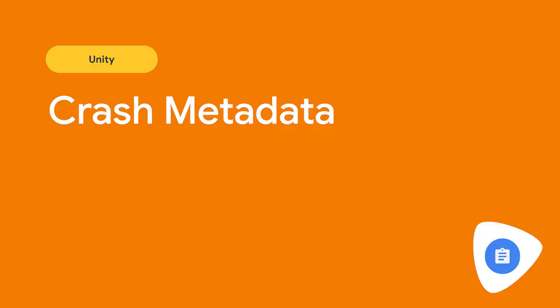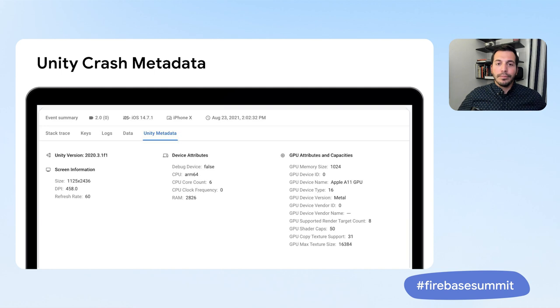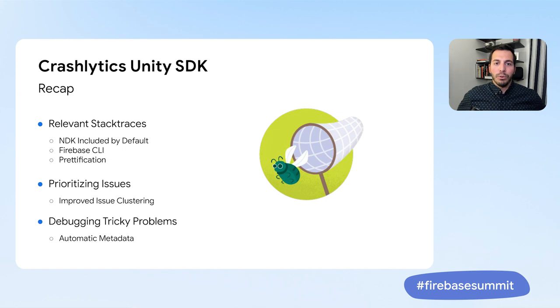Have you ever had a problem that only impacts certain devices or screen sizes? For example, an issue with some graphics cards missing a critical feature that your game depends on. Customers used to log this data themselves via Crashlytics custom keys. Now we include hardware and operating system metadata automatically, so you can easily look for patterns across your sessions to debug those tricky crashes — and this also frees up custom keys for other things.